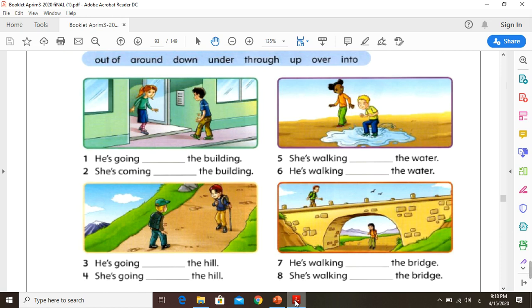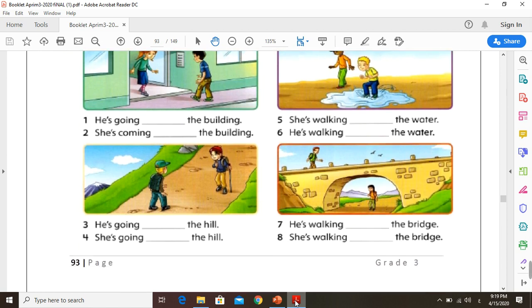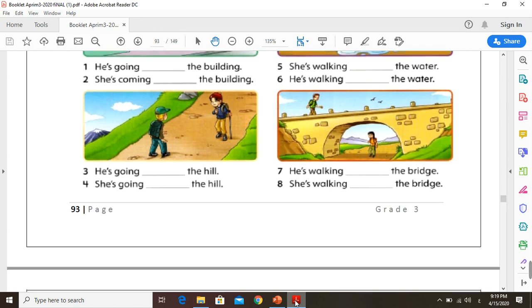Great. But the boy, he is walking through the water. Excellent. Number seven, the boy here, we also have here opposites. The boy up, so he is walking over the bridge, but the girl is walking under the bridge. Great.